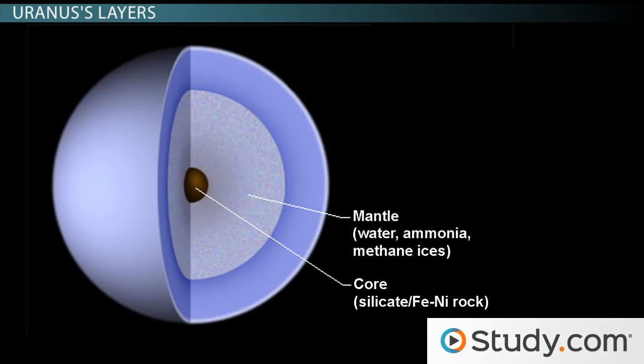Around this layer, the mantle layer is another layer that's made of liquid hydrogen, helium, and methane.